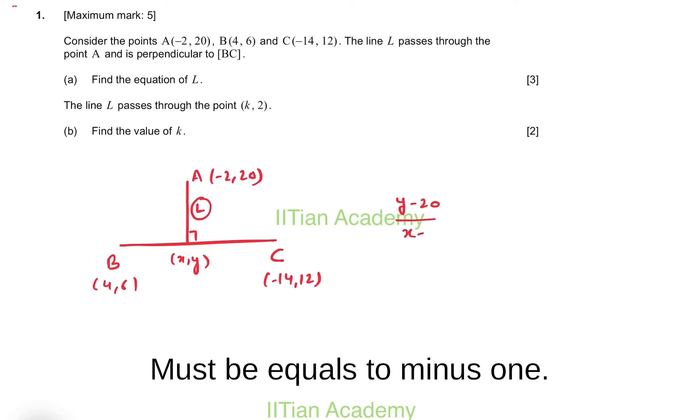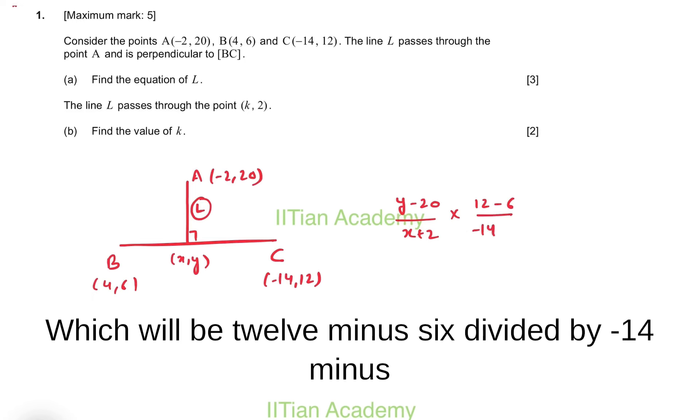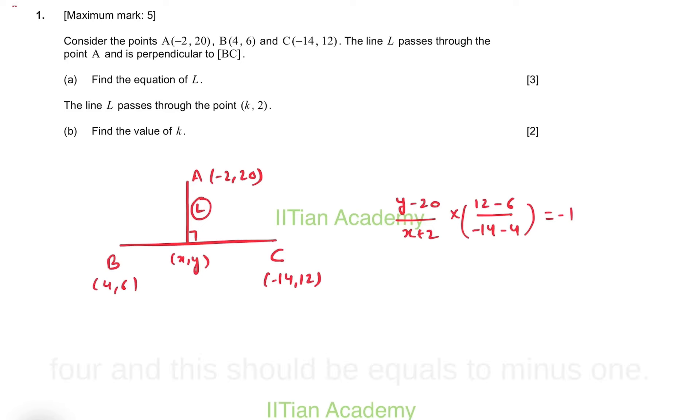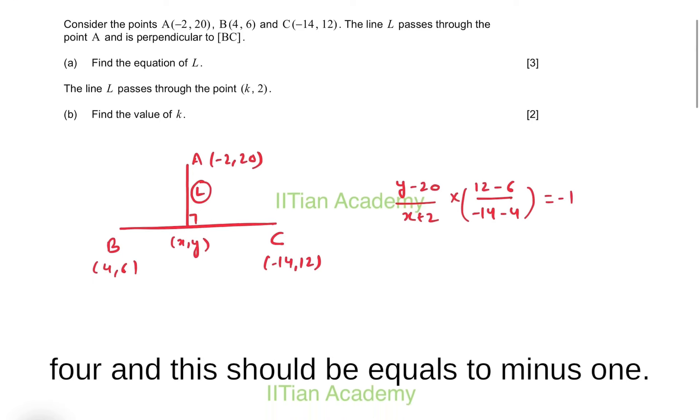So (y - 20)/(x + 2) multiplied by the slope of BC line, which will be (12 - 6)/(-14 - 4), should equal minus 1. So m1 times m2 equals minus 1.